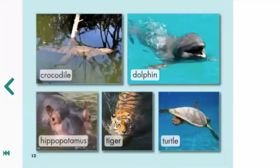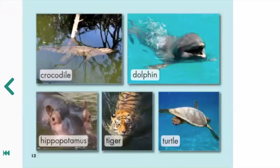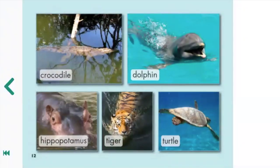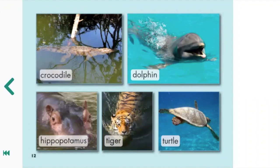Turn the page. This is called a glossary. Say the word glossary. A glossary is where the author tells you some of the important words from the book. Let's read the words: crocodile, dolphin, hippopotamus, tiger, turtle. Your turn. Turn the page. The end.